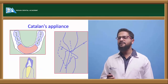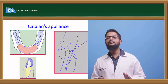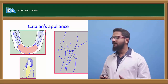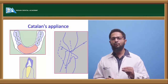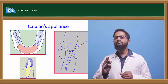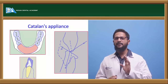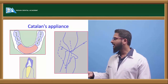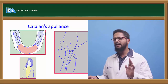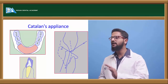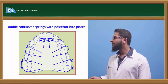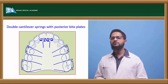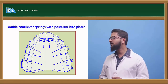Next is the Catlan's appliance. Catlan's appliance is nothing but a lower anterior inclined plane. It is prepared such that when the patient closes their mouth, the inclined plane pushes the maxillary teeth from the palatal aspect and moves them buccally. It exerts a force from the palatal aspect on the maxillary anterior teeth and pushes them buccally. Another option is use of double cantilever springs or Z-springs, which also help to exert force and move the retroclined maxillary anteriors in a labial direction.